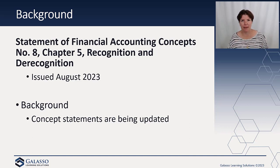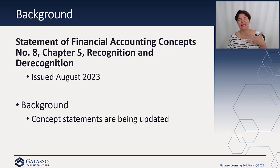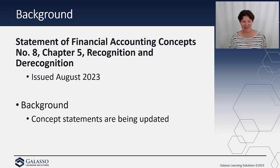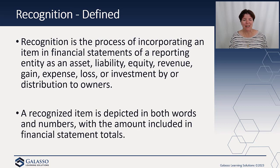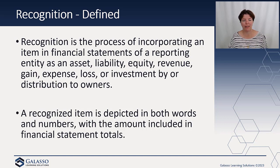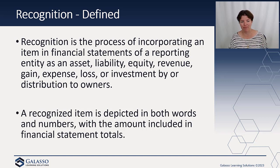We talked last week about the update related to the reporting entity. This is something that the FASB started, then stopped for a little while, and then restarted, and so we're starting to see some progress being made. Recognition is the process of incorporating an item in financial statements of a reporting entity — an asset, liability, equity, revenue, expense, loss, or investment by or distribution to owners. We call those elements, and first you have to meet the definition of an element.